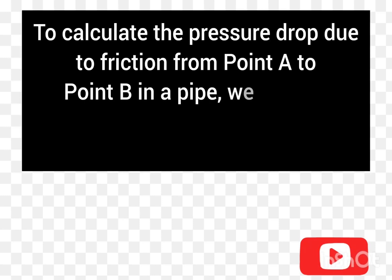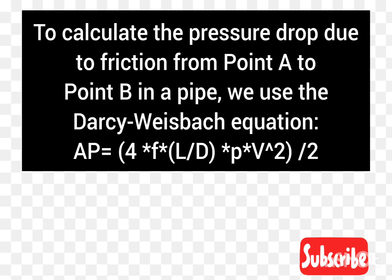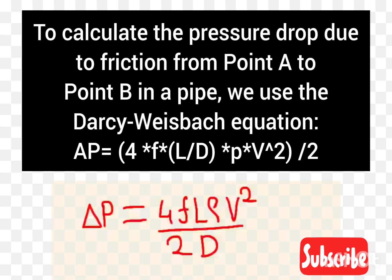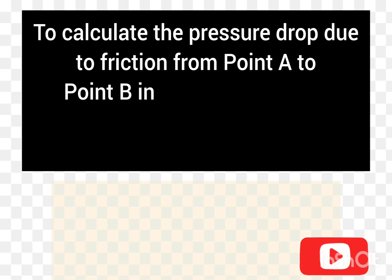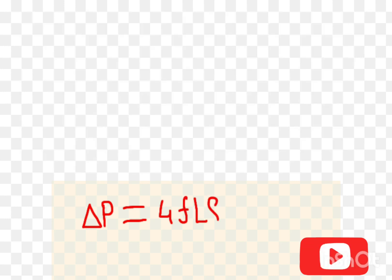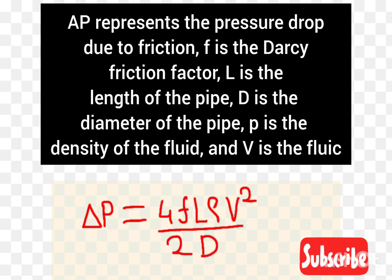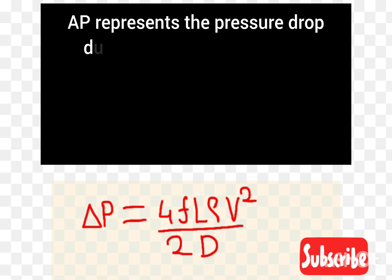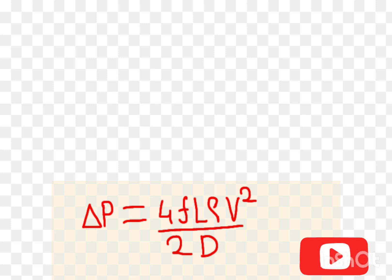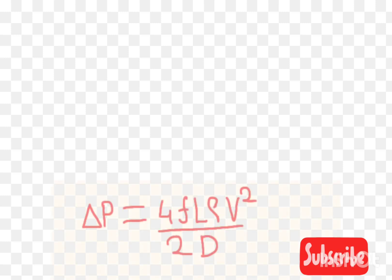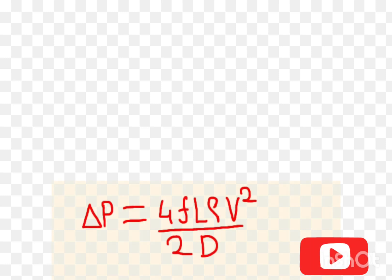To calculate the pressure drop due to friction from point A to point B in a pipe, we use the Darcy equation. The Darcy equation is: Delta P equals 4 times F times L times density times velocity squared, divided by 2D. Where Delta P is the pressure drop due to friction, F is the Darcy friction factor, L is the length of pipe, D is the diameter of pipe, rho is the density of the fluid, and V is the fluid velocity.